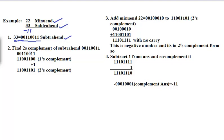Then we have to make the two's complement of that subtrahend 0011 0011. It's a very simple method — first we make the one's complement by simply interchanging 0 to 1 and 1 to 0. So 0011 0011 becomes 1100 1100. That is the one's complement of the subtrahend.